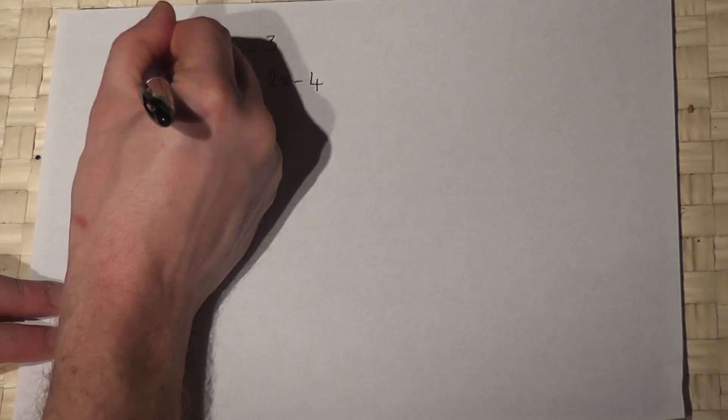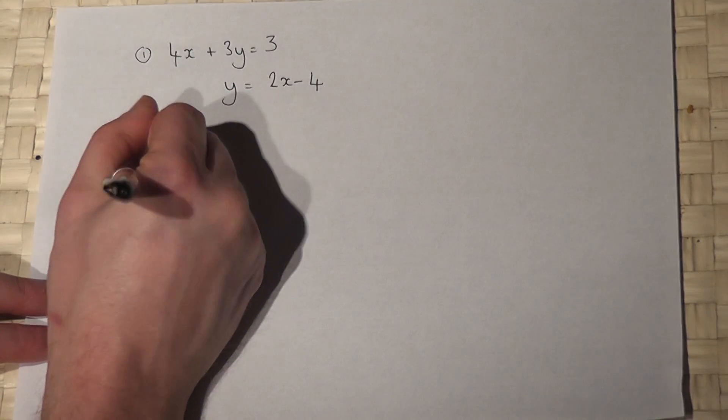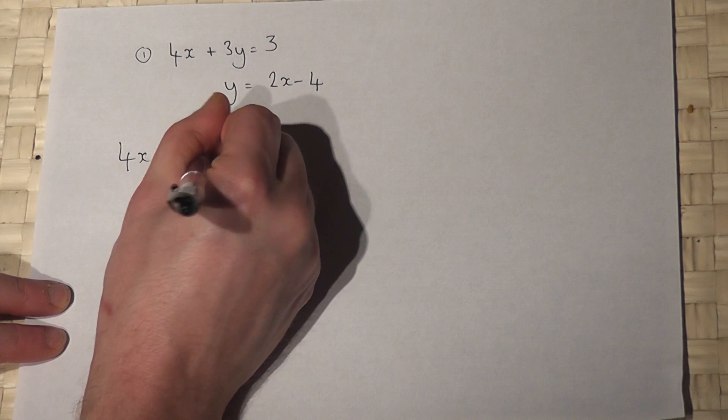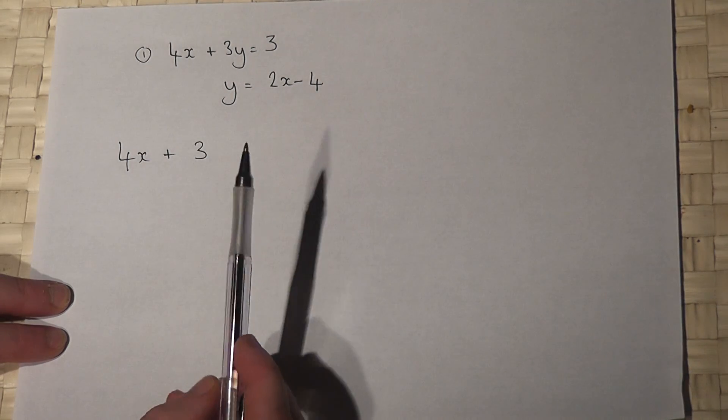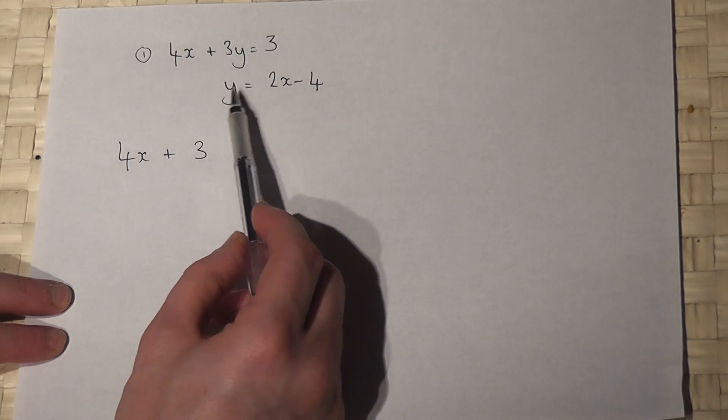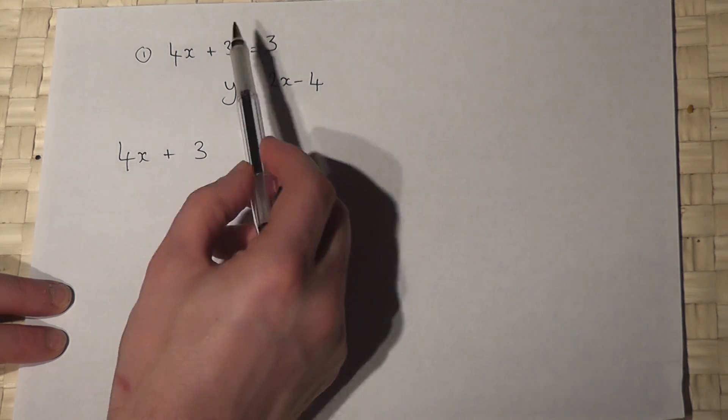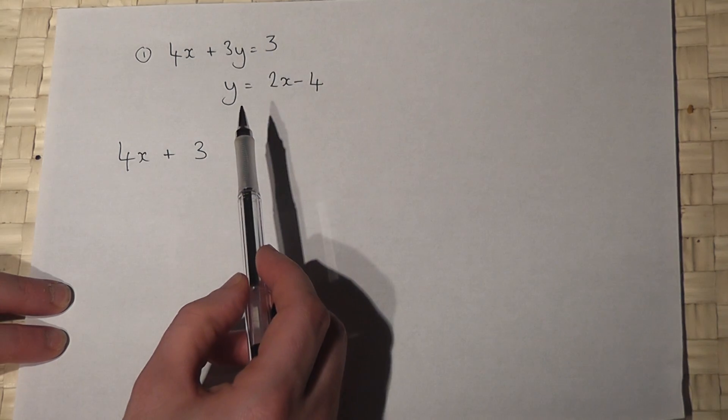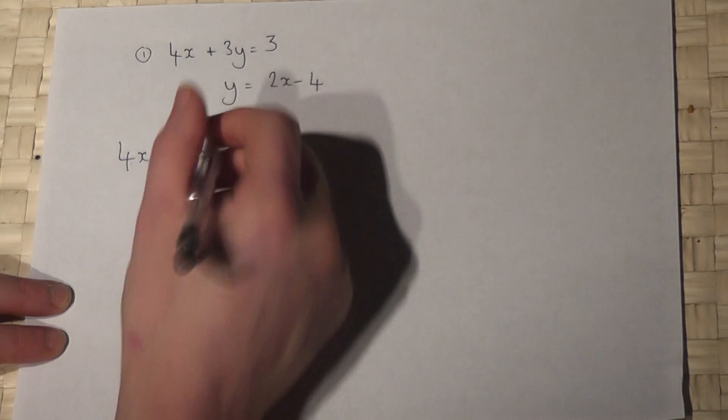So, if I look at equation 1, I've got 4x plus 3y. However, I know that y equals 2x minus 4, so this y can be replaced by 2x minus 4.